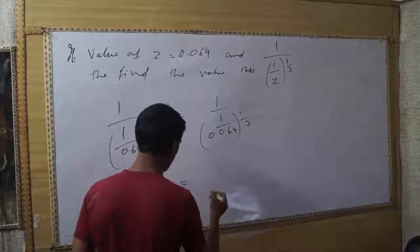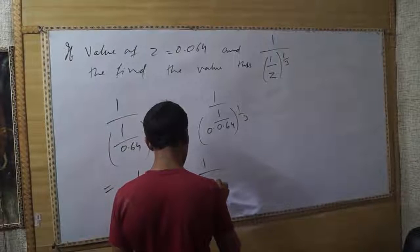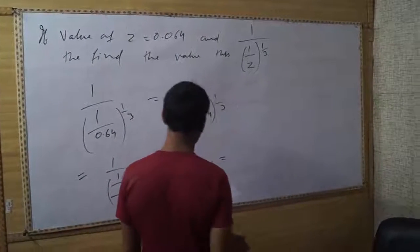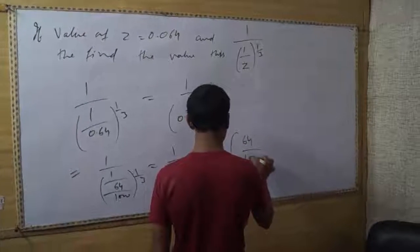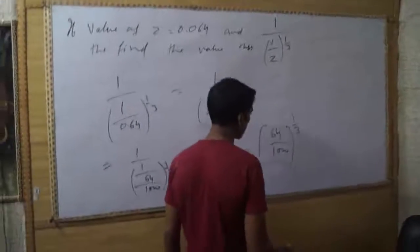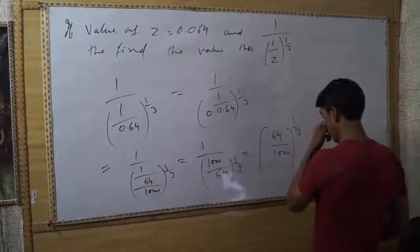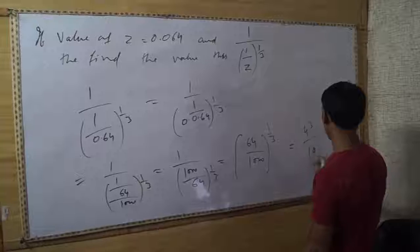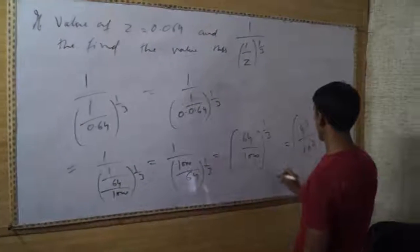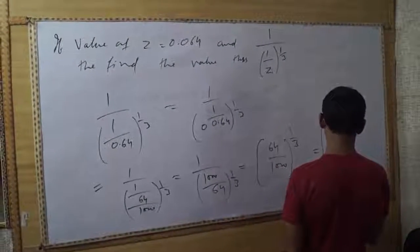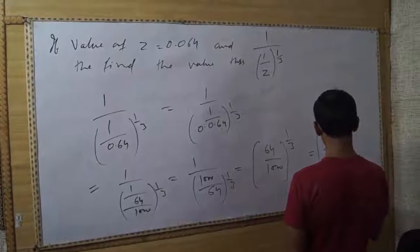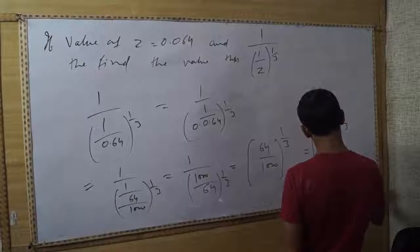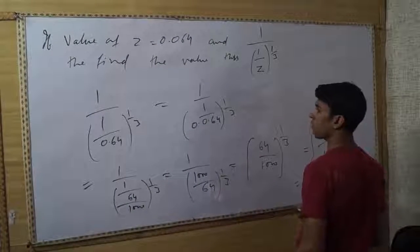This equals 1000 over 64 to the 1/3 power. Simplifying, 1000 over 64 equals 125 over 8. We can further simplify: 4 divided by 10 means 2 divided by 5. Now let's see which formula we are applying.